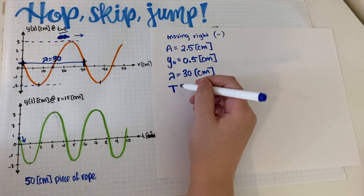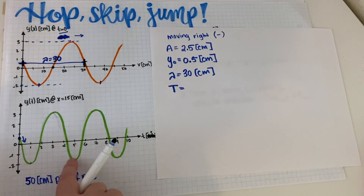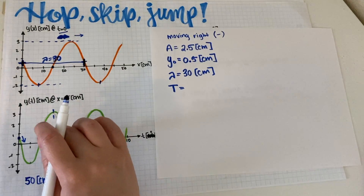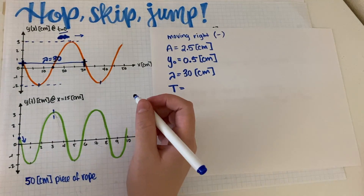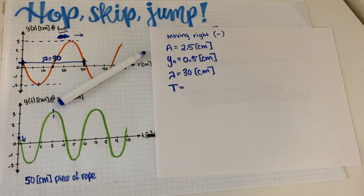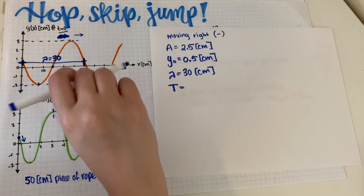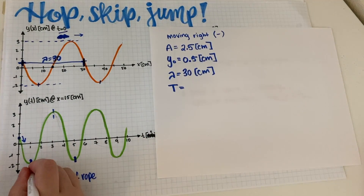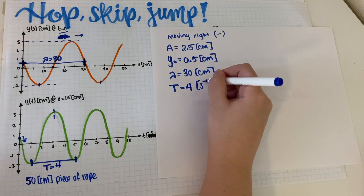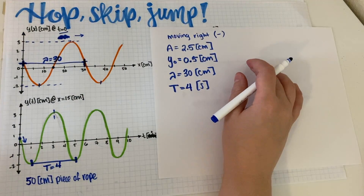For the period, we can grab the minimums from the y-t graph. Looking at the original picture, the maximums aren't well placed, but the minimums are well placed at t equals 1 and t equals 5. This distance is four, so the period T equals 4 seconds. Now we need to figure out the phase constant.